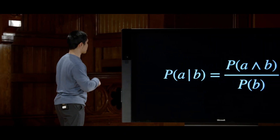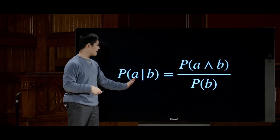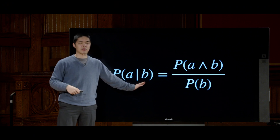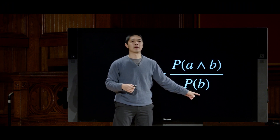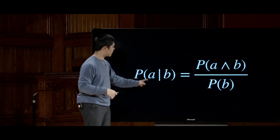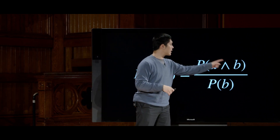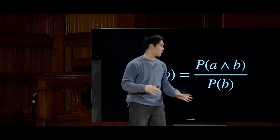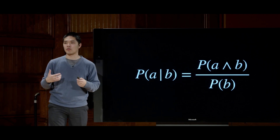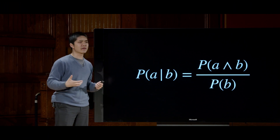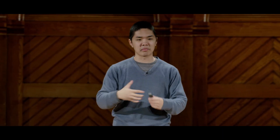How do we calculate conditional probability mathematically? The formula is: P(A | B) = P(A and B) / P(B). Intuitively, if I want to know the probability that A is true given that B is true, I consider all the ways they could both be true, out of only the worlds where B is already true. I can ignore all cases where B isn't true, because those aren't relevant to my computation.